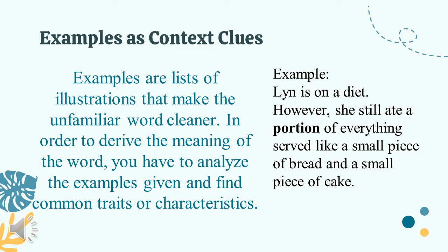Aside from synonyms and antonyms, we also have examples as context clues. Examples are lists of illustrations that make unfamiliar words clearer. To derive the meaning of the word, analyze the examples and find common traits or characteristics. For example: 'Lynn is on a diet; however, she still ate a portion of everything served — like a small piece of bread and a small piece of cake.' The word 'portion' is synonymous with 'small piece.' That is how we identify examples as context clues.